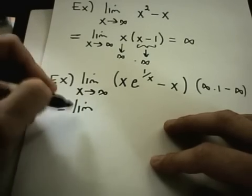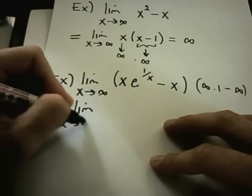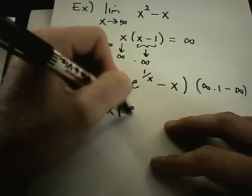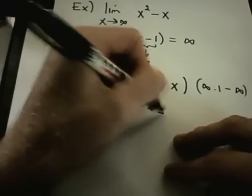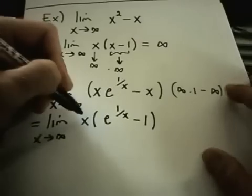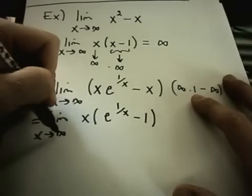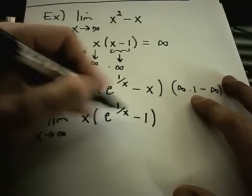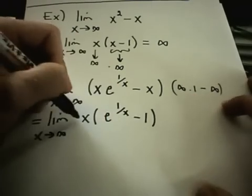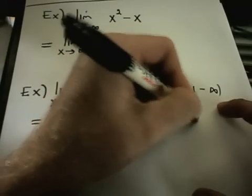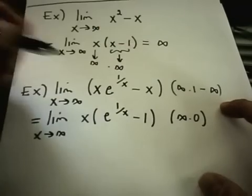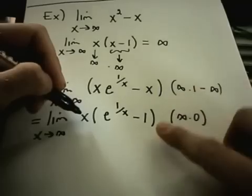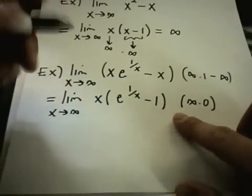Just like in the last problem, to get started I'm going to factor out an x. Now I have x times the quantity e to the 1 over x minus 1. Notice again, as x goes to infinity, I'm going to have e to the 0, or 1 minus 1 in the parentheses — I'm going to have infinity times 0. So now I've turned it from one of these indeterminate differences into an indeterminate product.